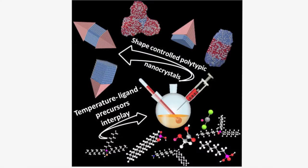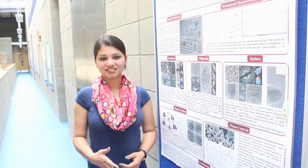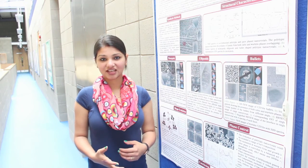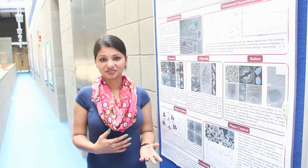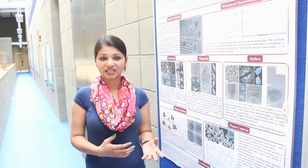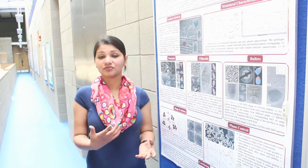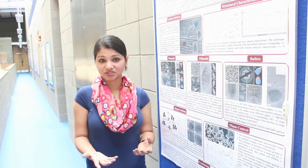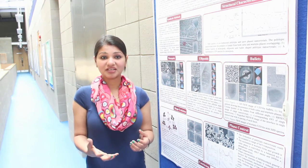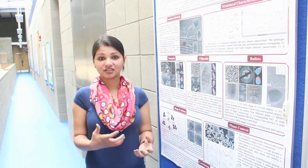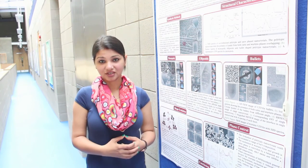The most common ligands used in these kinds of systems are alkyl phosphonic acids, phosphines, alkyl amines, or carboxylic acids. The interaction between these ligands and the ion precursors further decides the rate of nucleation, the number of nuclei formed during nucleation, which ultimately affects the final morphology of the nanocrystals.